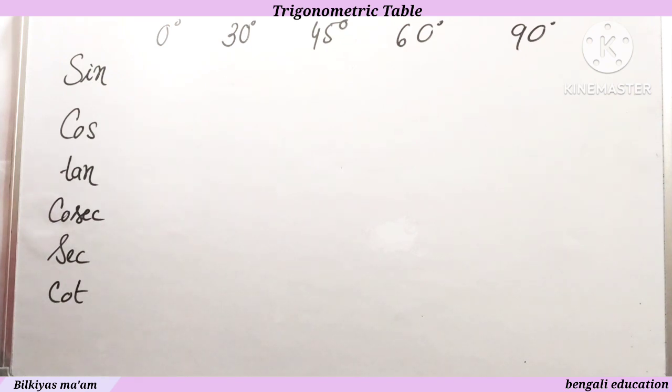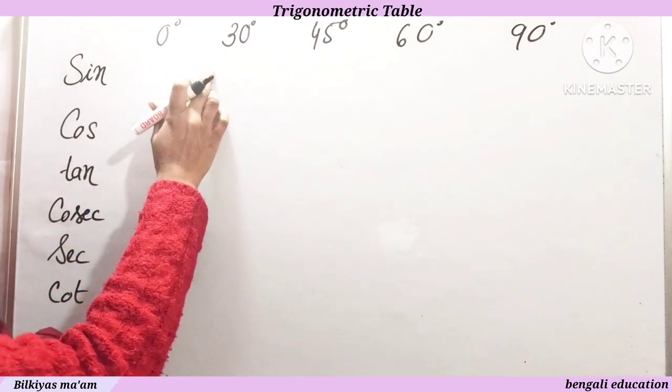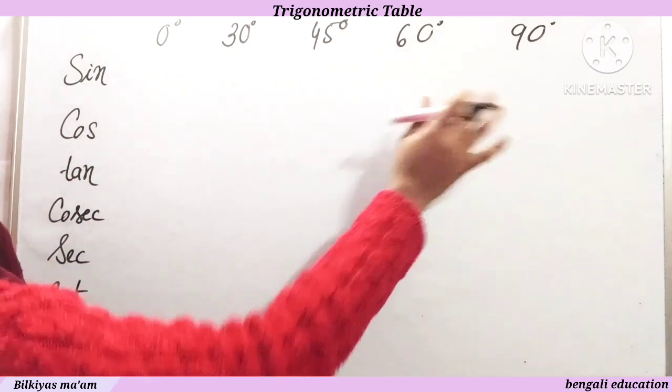In the trigonometric table, we have a few special angles: zero degree, thirty degree, forty-five degree, sixty degree, and ninety degree.